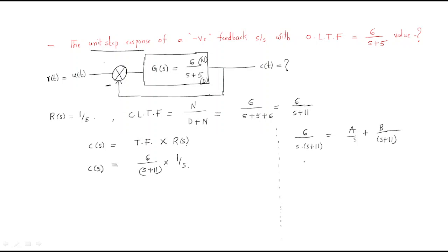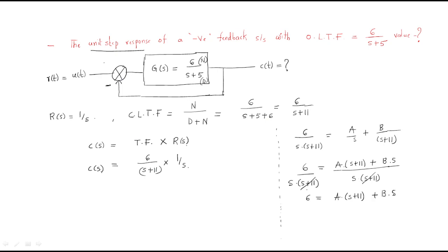Taking the LCM, both denominators cancel and we get 6 = A(s+11) + B·s. Putting s = -11 gives B = -6/11.